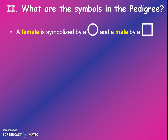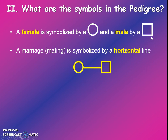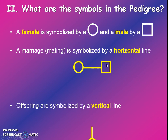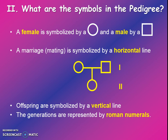All the symbols in a pedigree mean something, and we're going to go through all of them right now. A female is shown as a circle, and a male is shown as a square. One way to remember that is that females are curvier than males. Marriage is shown as a horizontal line connecting the two partners. Offspring are shown as a vertical line from the marriage. Generations are shown as Roman numerals, starting at the top as the oldest generation moving downwards to their children and children's children.